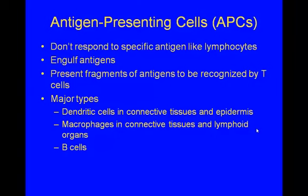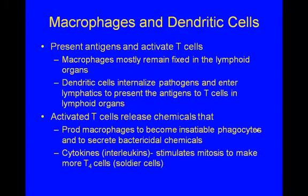There are types of APCs. Dendritic cells are found in connective tissues and epidermis. Macrophages are found in connective tissues and lymph organs, and B cells are found in all the humors — all of these can act as APCs. Macrophages and dendritic cells present antigens and activate T cells. Macrophages mostly remain fixed in the lymphoid organs, while dendritic cells internalize the pathogen and then enter the lymphatic system to present antigens to T cells in those lymph organs.